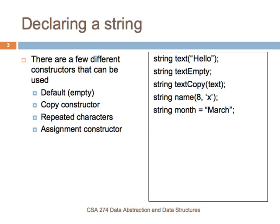You can also have an empty string — here 'text_empty' is declared with no value, so printing it will produce an empty string. There is also a copy constructor that takes the name of another string in parentheses to create a copy. There is a repeated-characters constructor: for example, a string called 'name' with the integer 8 and the character 'x' will construct a string eight characters long where all characters are 'x'. Finally, you can use an assignment constructor, assigning a constant character string — for example, 'month' is initialized to the value 'March'.